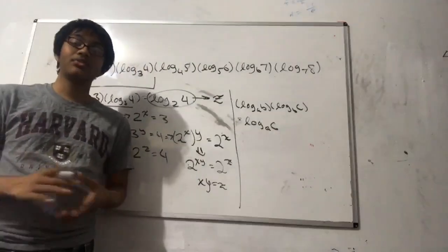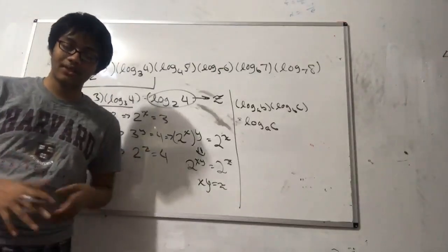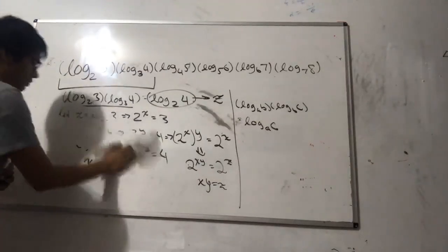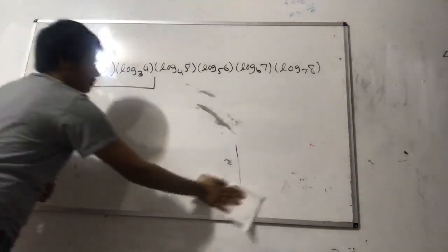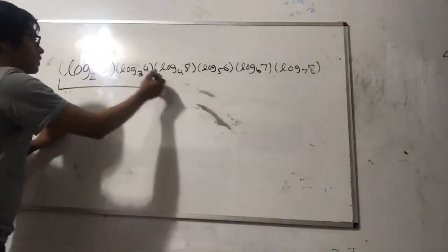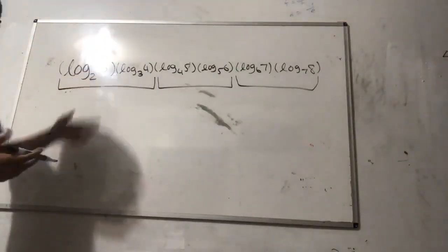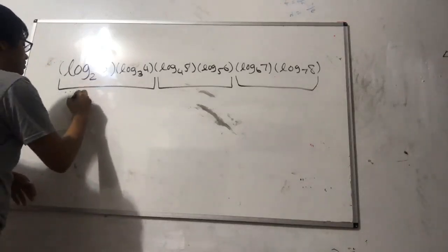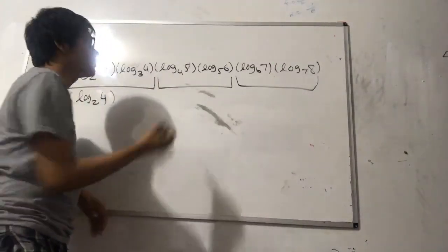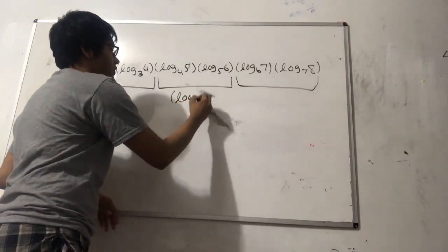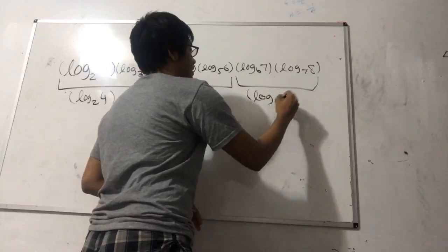Now let's use the chain rule to solve the original problem — it breaks down very nicely. Applying the chain rule: log base 2 of 3 times log base 3 of 4 equals log base 2 of 4. Then log base 4 of 5 times log base 5 of 6 equals log base 4 of 6. And log base 6 of 7 times log base 7 of 8 equals log base 6 of 8.